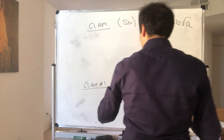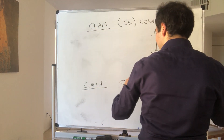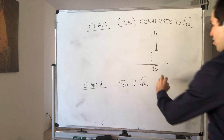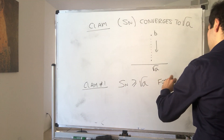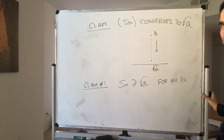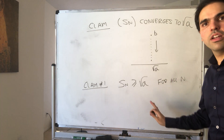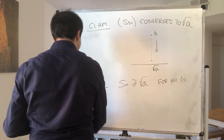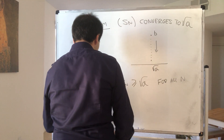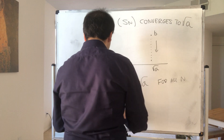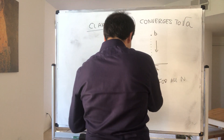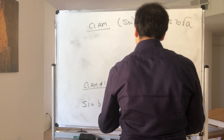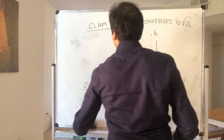First, let's show that s_n is bounded below by the square root of a for all n. The first term is b, which by definition is greater than the square root of a, so s_1 is greater than or equal to the square root of a.